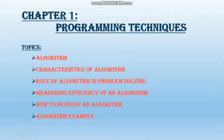As I told you, this chapter is actually related to algorithms and flowcharts. In the previous lecture, we discussed problem solving, which is the basic part of making an algorithm. Because we have to follow the steps of problem solving, then we can make an algorithm and flowchart and solve the problem. Today's topics are: algorithm, characteristics of algorithm, role of algorithm in problem solving, measuring efficiency of an algorithm, how to develop an algorithm, and algorithm examples.